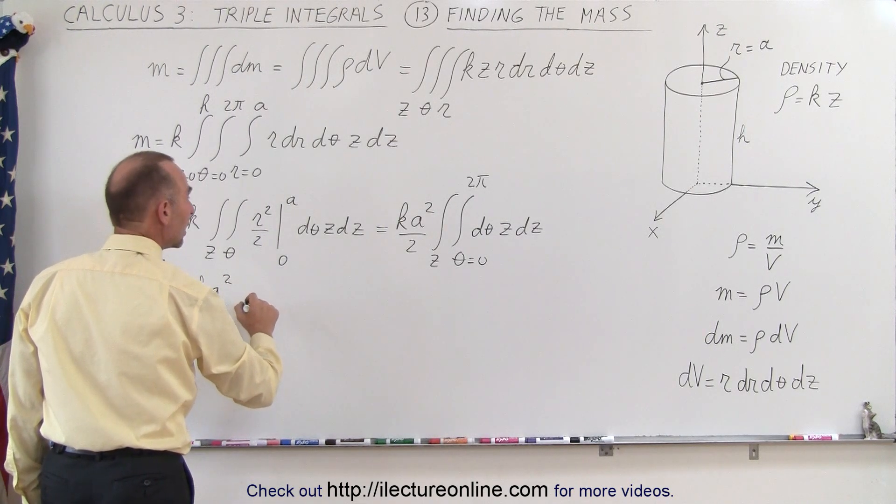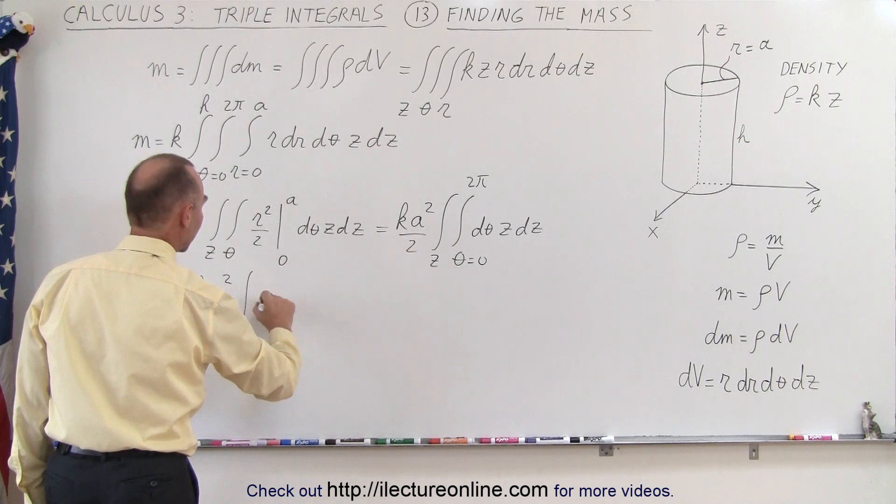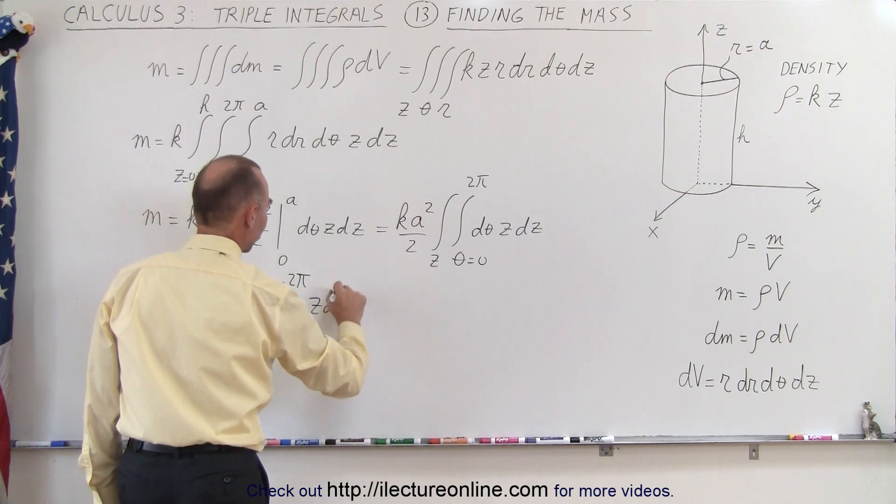We still have the integral left over z, and then we have θ evaluated from 0 to 2π, and we still have z dz left.